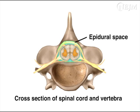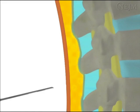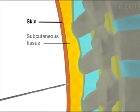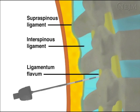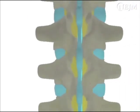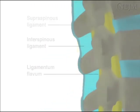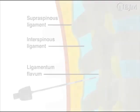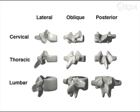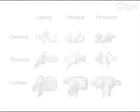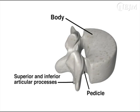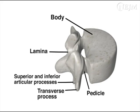Understanding the anatomy traversed by the epidural needle facilitates safe identification of the epidural space. The first tissue layer encountered is the skin, followed by subcutaneous tissue. If entering along the midline, the needle will then traverse three ligaments: the supraspinous ligament, the interspinous ligament, and the ligamentum flavum. These ligaments provide resistance to the advancing needle and are dense enough to hold the needle in position when released. The ligamentum flavum is the last connective tissue layer before the needle enters the epidural space. A vertebra consists of the body, the pedicles, the superior and inferior articular processes, the laminae, the transverse processes, and the spinous process.